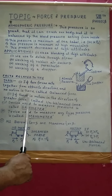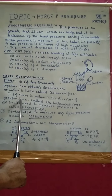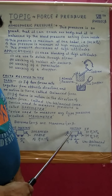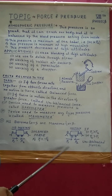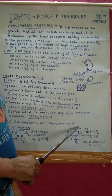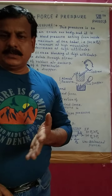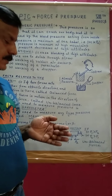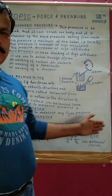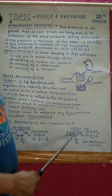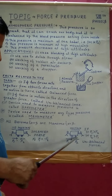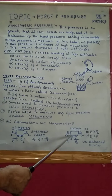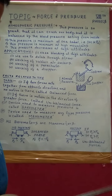Number two: if there is motion in the direction of the greater force, it is called an unbalanced force. In the figure, two persons apply forces F1 and F2 from opposite directions on a trolley. If F1 is greater, the trolley moves in the direction of F1; if F2 is greater, it moves in the direction of F2. So: balanced force means no motion, and unbalanced force means there is motion.